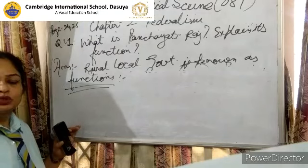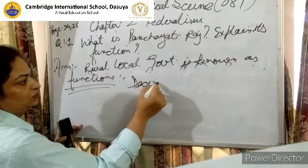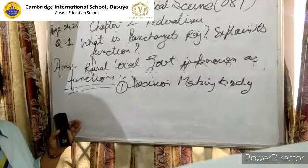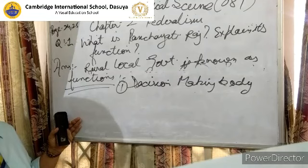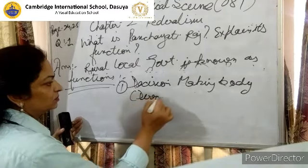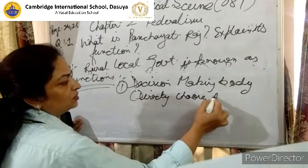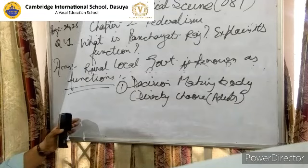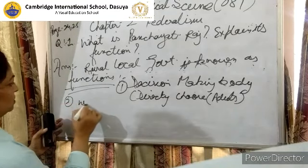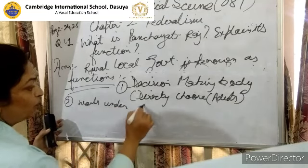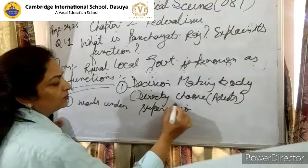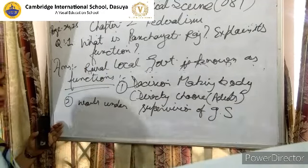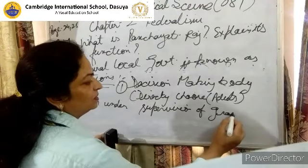Now let us discuss the functions of Panchayati Raj. First function: it is a decision-making body. Adults living in the village directly choose their representatives. Second function: the Panchayati Raj works under the supervision of the Gram Sabha.